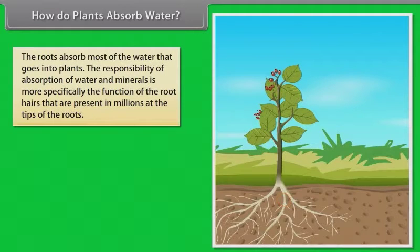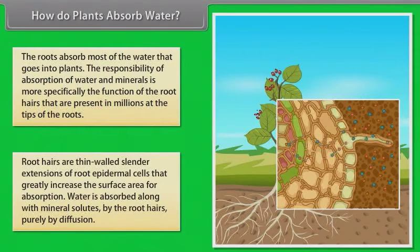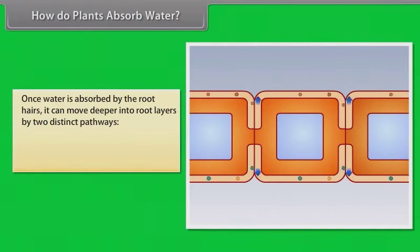How do plants absorb water? Now let us understand how plants absorb water. The roots absorb most of the water that goes into plants. That is why we give water to the soil and not on the leaves. The responsibility of absorption of water and minerals is more specifically the function of the root hairs that are present in millions at the tips of the roots. Root hairs are thin-walled slender extensions of root epidermal cells that greatly increase the surface area for absorption. Water is absorbed along with mineral solutes by the root hairs purely by diffusion. Once water is absorbed by the root hairs, it can move deeper into root layers by two distinct pathways.